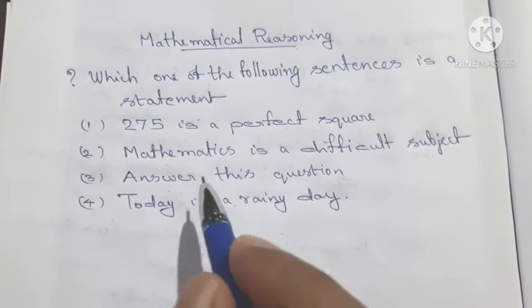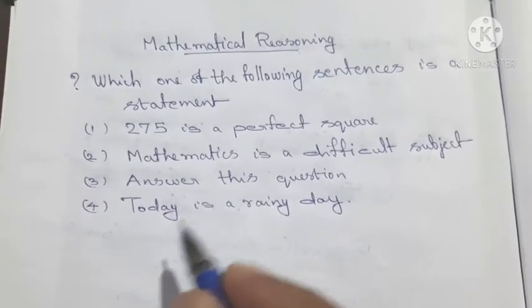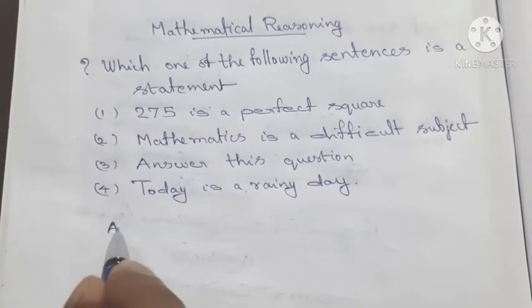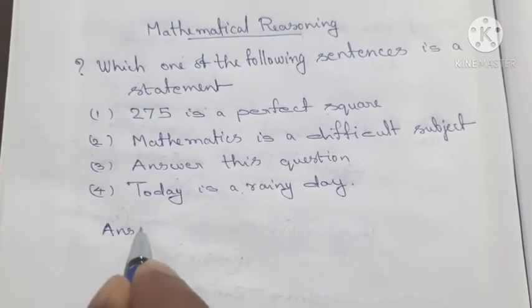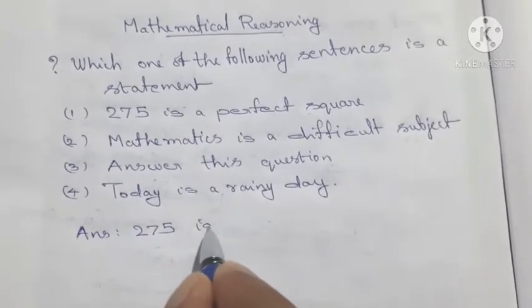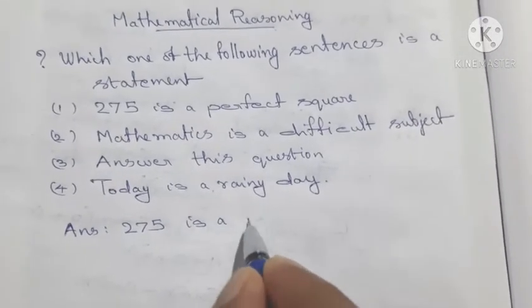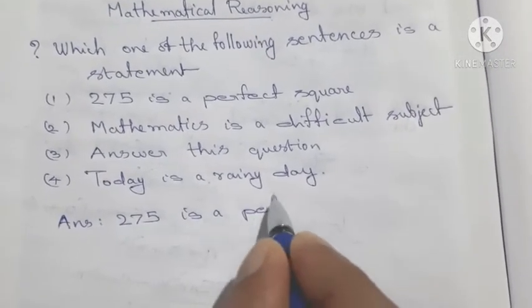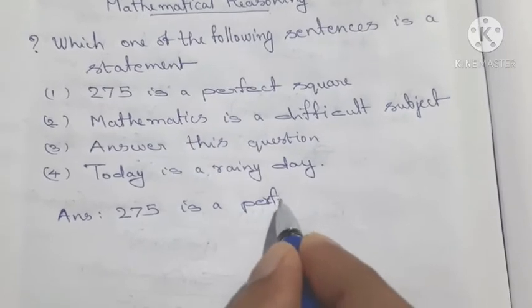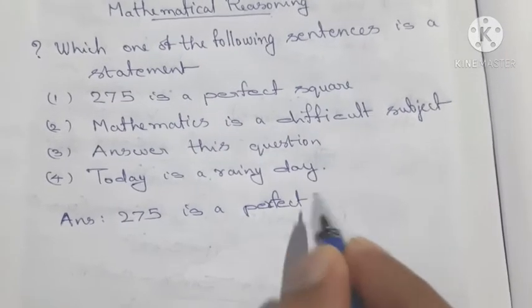It is a statement. Two: 75 is a perfect square.